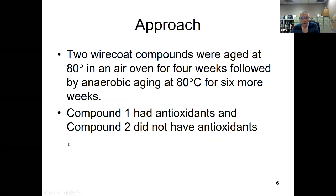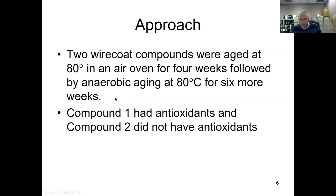We looked at two natural rubber conventional cure compounds aged at 80 degrees C. The experimental approach: aged 80 degrees C in an air oven for four weeks, followed by anaerobic aging at 80 degrees C for six more weeks. Compound one had antioxidants; compound two had no antioxidants. This simulates real-world cycling between aerobic and anaerobic conditions — for instance, when driving to work and back, or a truck on the road for 18 hours then parked for 8.